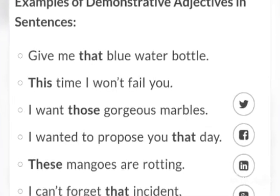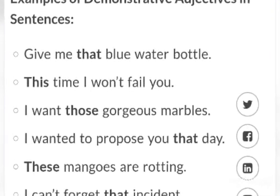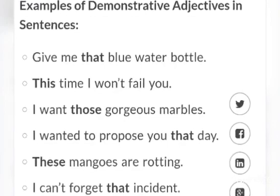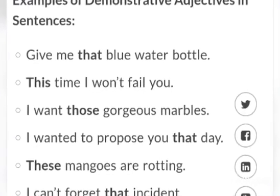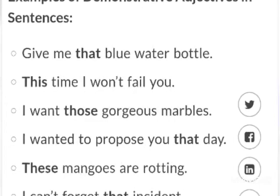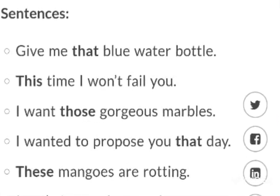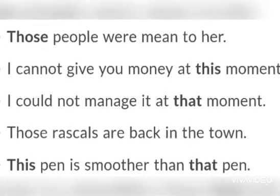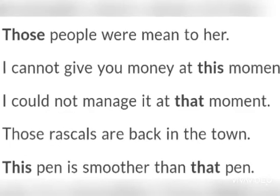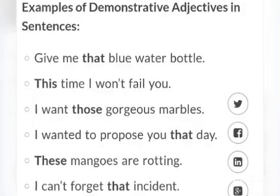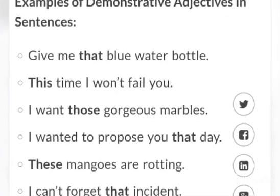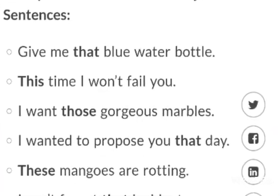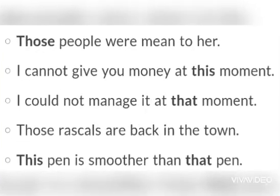Let's take some examples of demonstrative adjectives. Give me that blue water bottle — the word 'that' is a demonstrative adjective. This time I won't fail you. I won't let those gorgeous marvels. I won't let you propose that day. This pen is smoother than that pen — the words like 'this' and 'that' are our demonstrative adjectives. I can't forget that incident. These mangoes are rotten. The words like 'these' and 'those' are also demonstrative adjectives.